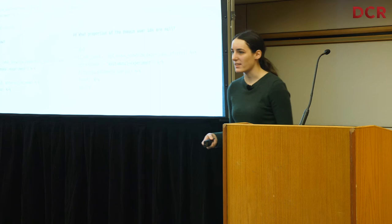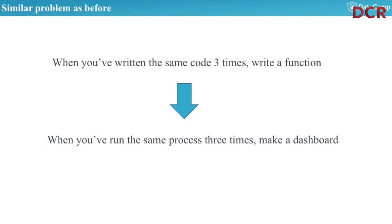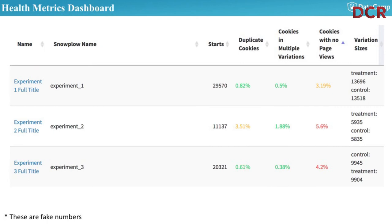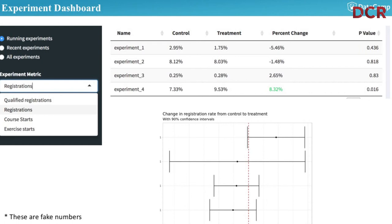This is a similar problem to before: when you've run the same process three times, I suggest making a dashboard. Sometimes writing a function is handy, but it's still a bit repetitive. So I want to say: build tools that also empower others. I built a health checks dashboard for DataCamp — using fake numbers here — where for each experiment we can monitor the percent of duplicate cookies, how many cookies are in multiple variations, how many have no page views, and the variation size which warns us of unequal splits between control and treatment.